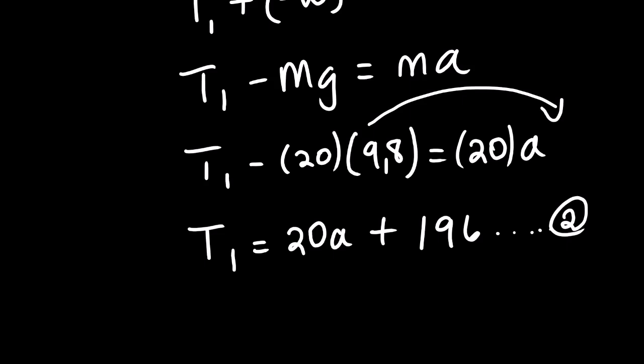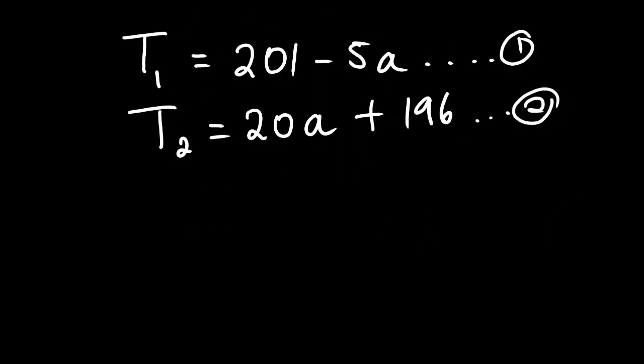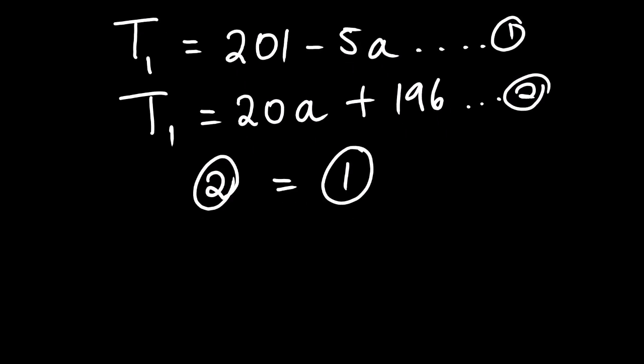Now as you can see equation 1 and equation 2, T1 is the subject of the formula. We can equate the two equations and solve for the unknown which is the acceleration. So now it's T1, we can equate the two equations since T1 is the subject of the formula. So equation 2 is equals to equation 1.